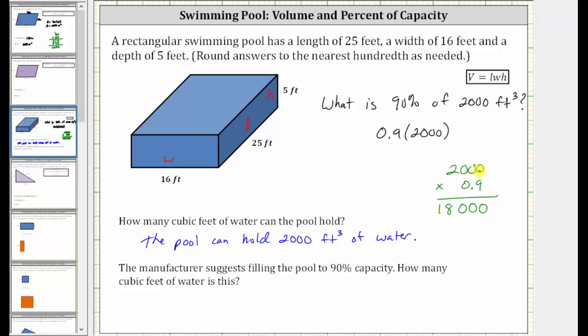And then again, this product must contain one decimal place. And therefore, the product of 2,000 and 0.9 is 1,800.